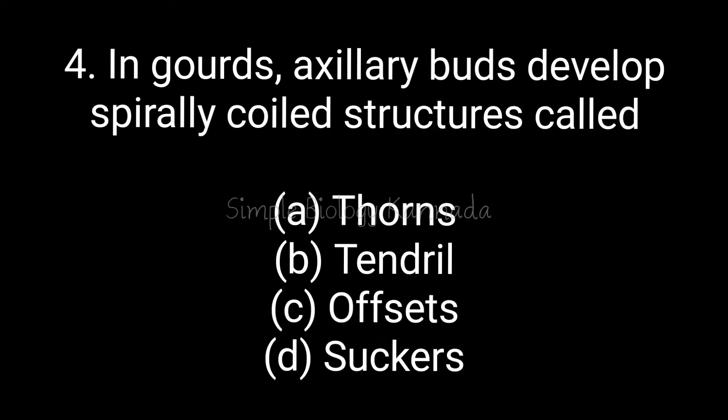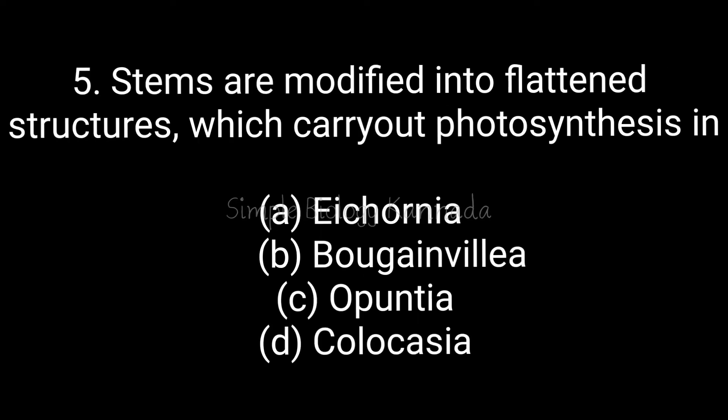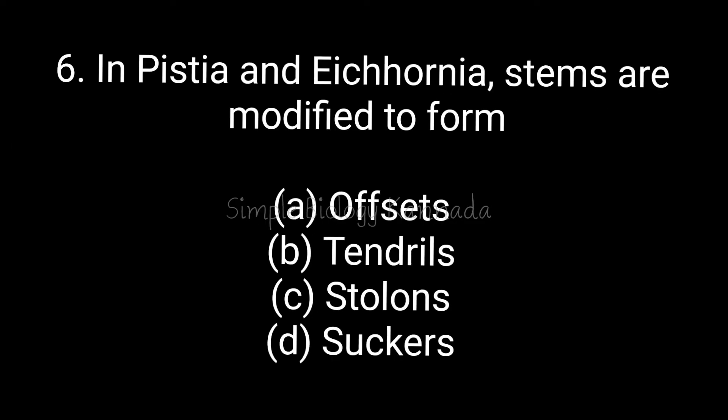The answer is option B: tendrils. Next question: stems are modified into flattened structures which carry out photosynthesis. This is the same type of question — if you have a particular modification, you can identify the name and example easily. The answer is phylloclade, and the example is Opuntia, so the answer is option C.